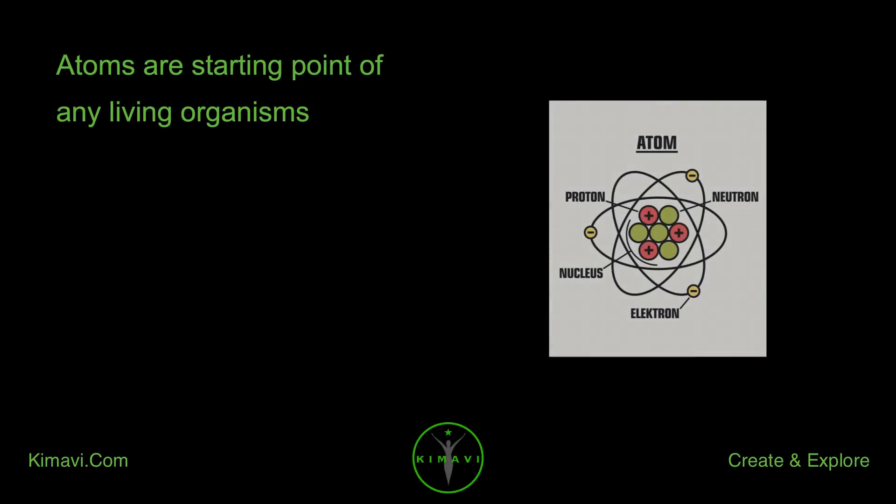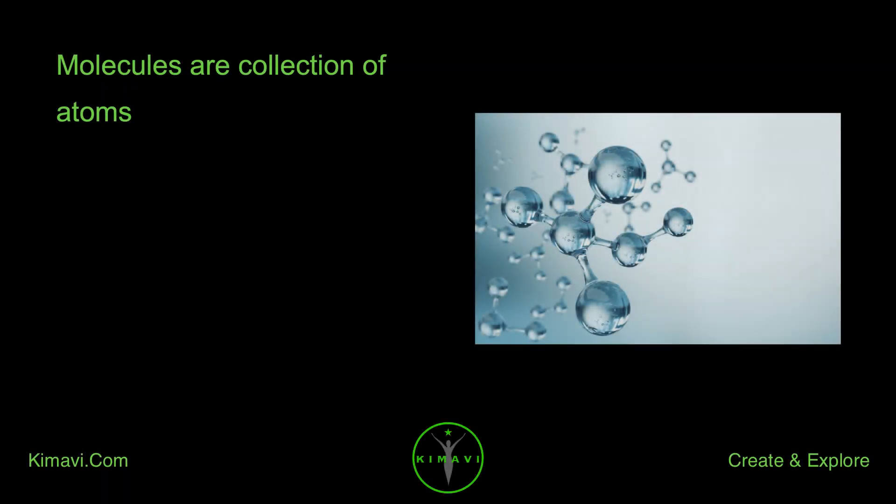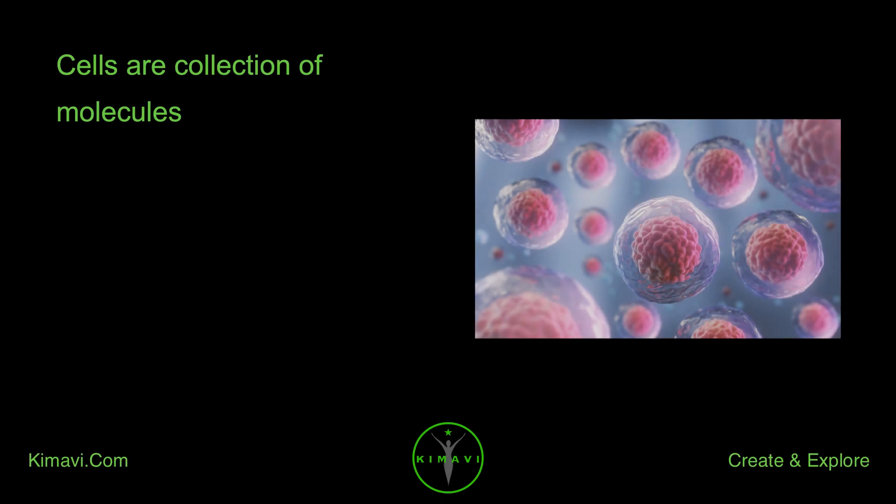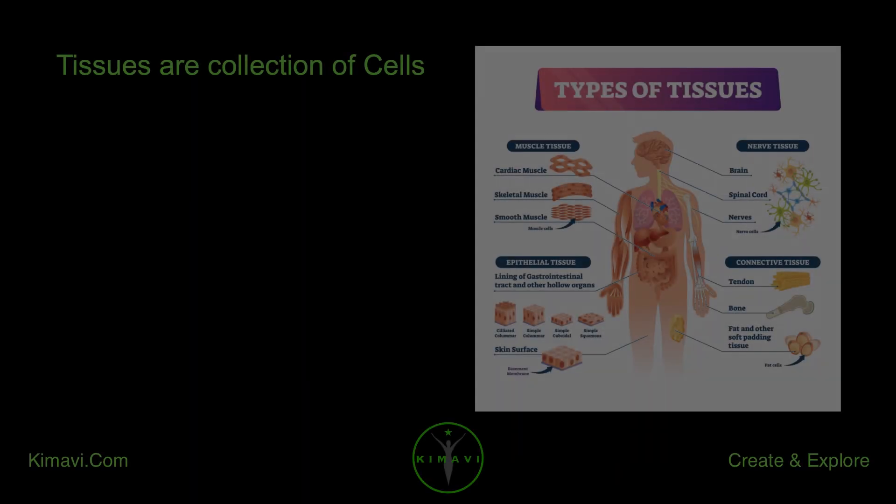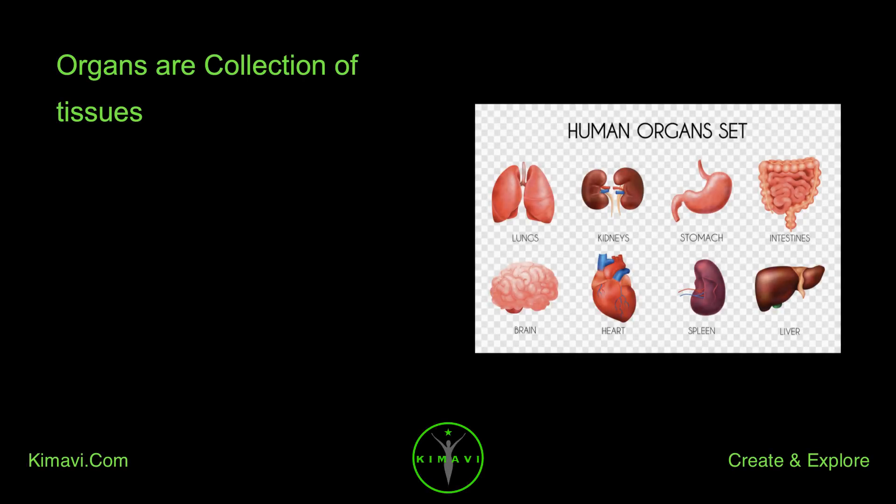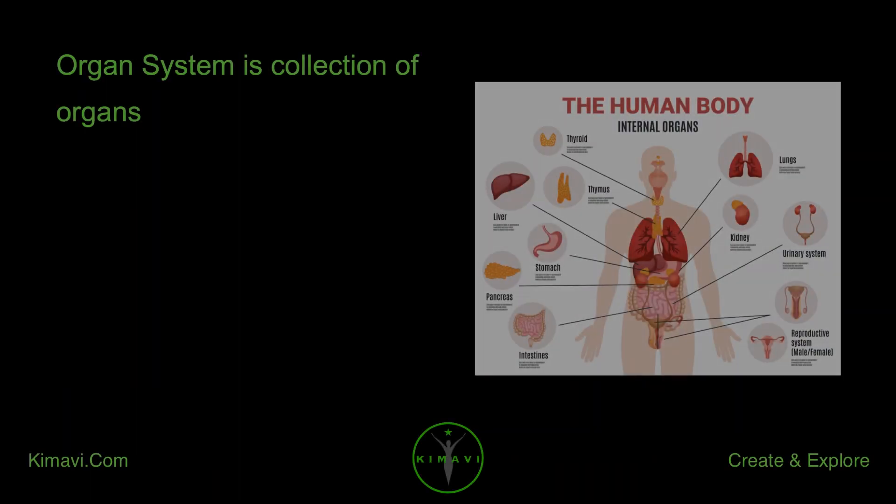Atoms are the starting point of any living organisms. Molecules are collections of atoms. Cells are collections of molecules. Tissues are collections of cells. Organs are collections of tissues. Organ systems are collections of organs.